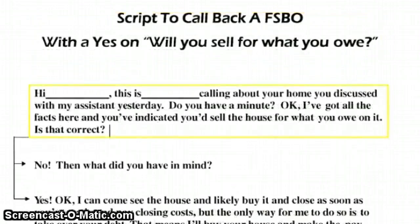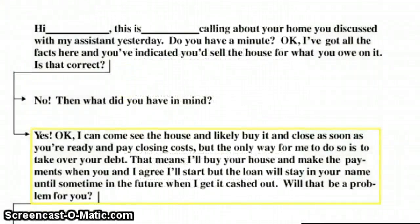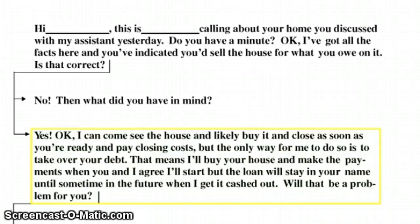The script begins: 'Hi John, this is Ron calling about your home — we discussed with my assistant yesterday. Do you have a minute?' I always like to give them a chance to tell me if they want to talk now instead of rudely interrupting. Then: 'Well look, I've got all the facts here. You've indicated you'd sell the house for what you owe on it — is that correct?' If the seller says yes, your next line is: 'I can come see the house and likely buy it, close as soon as you're ready, and pay closing costs, but the only way for me to do it is to take over your debt. That means I'll buy your house and make the payments when we agree to start, but the loan will stay in your name until sometime in the future when I get it cashed out. Will that be a problem for you?'